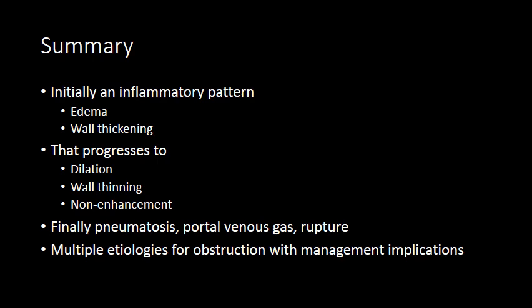In summary, small bowel ischemia initially presents with mural stratification, submucosal edema, and wall thickening. As ischemia progresses, you get dilation of the bowel, thinning of the small bowel wall, and non-enhancement. If not addressed, you will develop pneumatosis, portal venous gas, and potentially bowel rupture. Keep multiple etiologies on your differential when seeing mural stratification, pneumatosis, dilated bowel, or non-enhancing bowel.